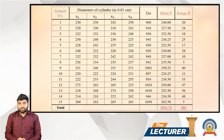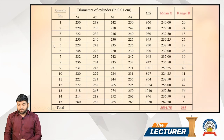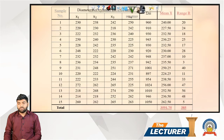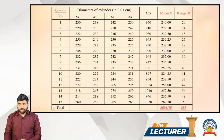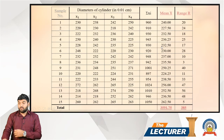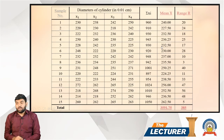For sample number 5, the observations are: X1 = 2.28, X2 = 2.42, X3 = 2.35, and X4 = 2.25. The total is 9.30, and the mean X-bar is 9.30 divided by 4, which equals 2.32.5.